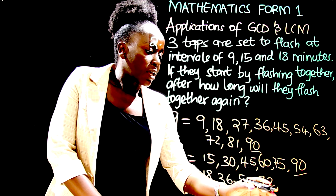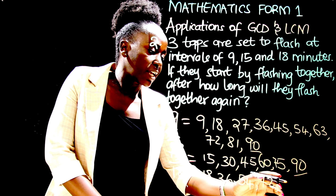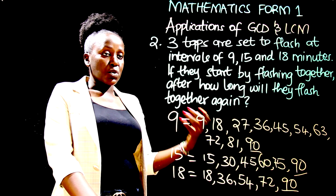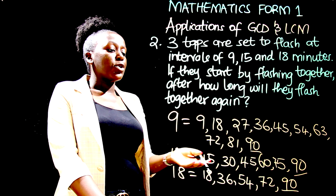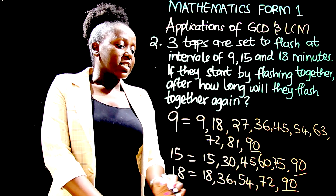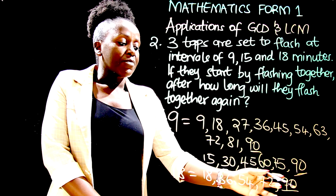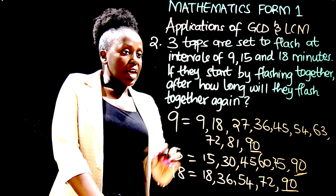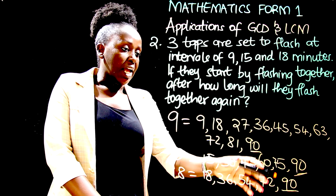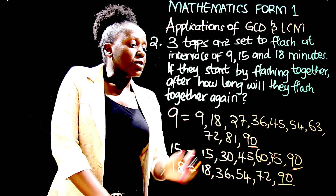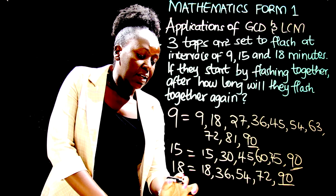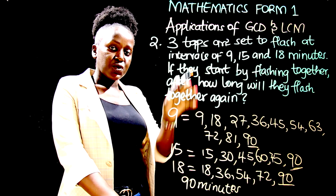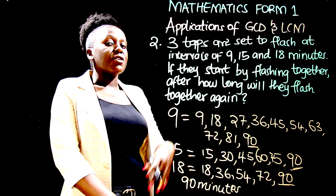Continuing with multiples of 18: 18 times 5 is 90. So we get to 90 again. Of course if we continue we will get other common multiples, but we are interested in the least common multiple which is 90. It's a multiple of 9, it's a multiple of 15, and it's a multiple of 18. So the LCM of 9, 15, and 18 is 90. Therefore the three taps will flush together again after 90 minutes. After another 90 minutes they will flush together again.